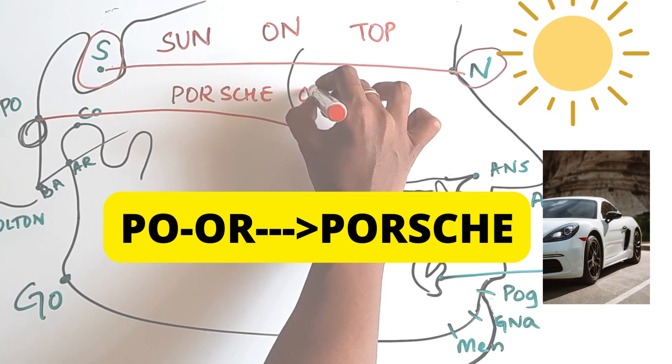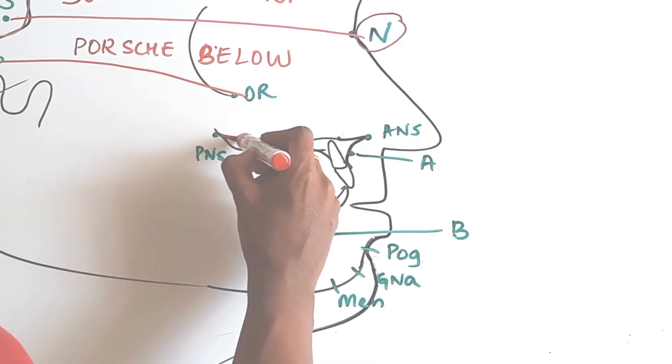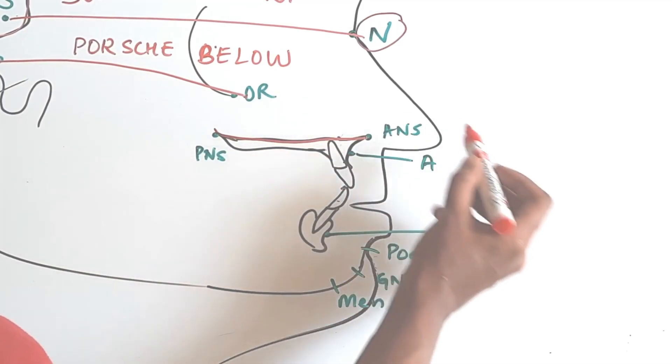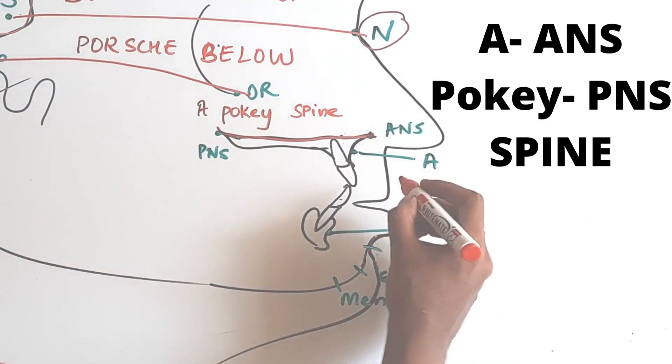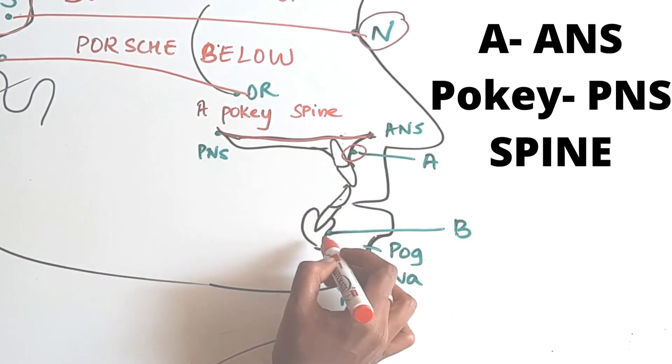Porsche has the words P-O-O-R. To remember the spines, just think a pokey spine. A pokey spine. A stands for ANS, pokey, the word P for PNS.